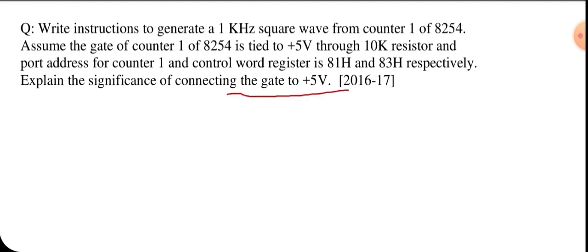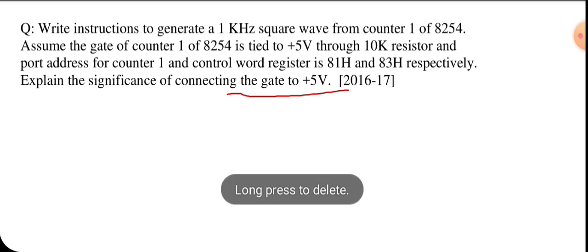The gate basically works as a trigger for the counter. If the gate value is high, the counter will be enabled and will perform down counting. So if we want to turn on the counter, the gate should be connected to a high voltage. That is why the gate is connected to plus 5 volt — this is the significance of this connection.